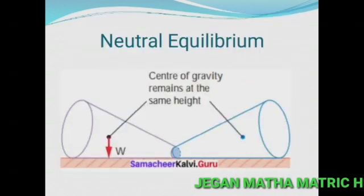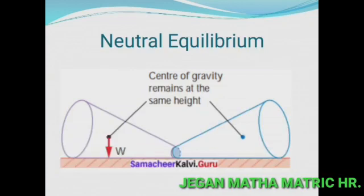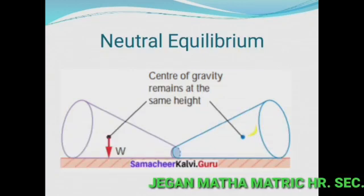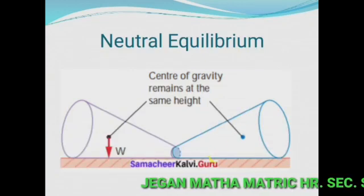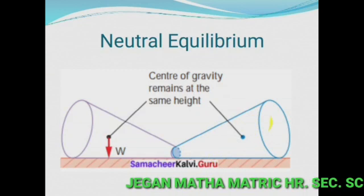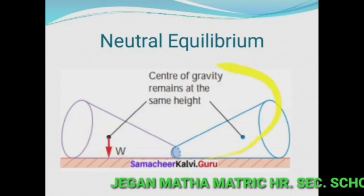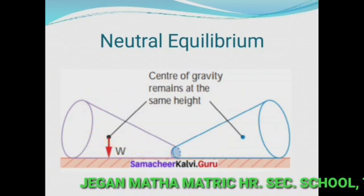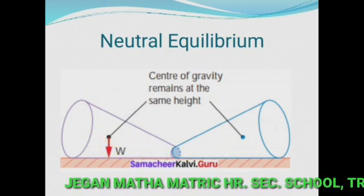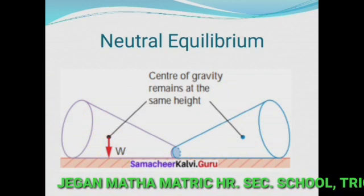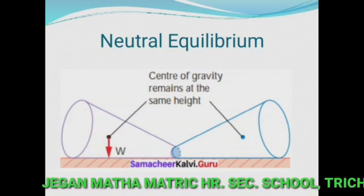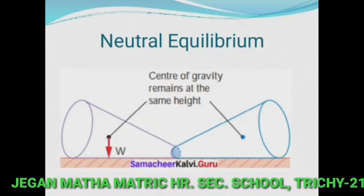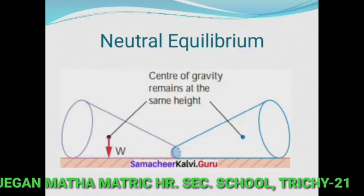For neutral equilibrium, the frustum will roll about but does not topple. Its center of gravity remains at the same height when displaced. The body will stay at any position to which it has been displaced.